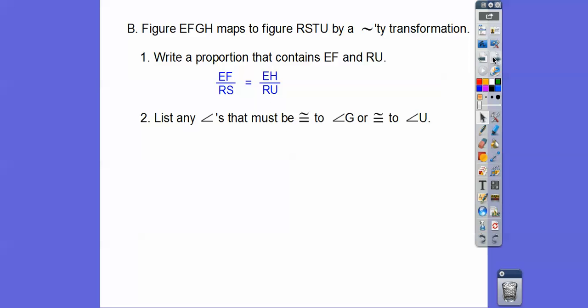So list any angles that must be congruent to angle G or congruent to angle U. So angle G is the third, so that's going to be equal to T right there. And then let's put that down. So angle U is the last, so that's going to be congruent to angle H. The angles are congruent and the corresponding sides are proportionate. Proportion, fraction equals a fraction, and the angles are congruent.